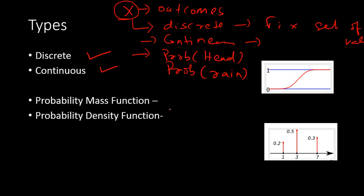There are two definitions that need to be understood before we explore the nuances of discrete and continuous distributions: one is the probability mass function and the other is the probability density function. The probability distribution of a discrete distribution is denoted by what is known as a probability mass function.